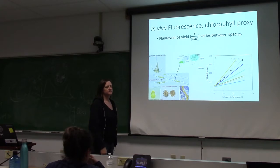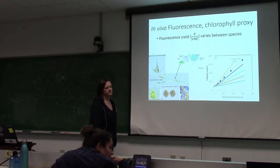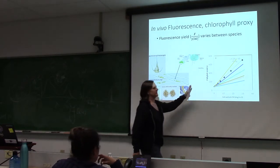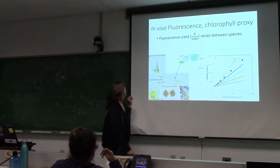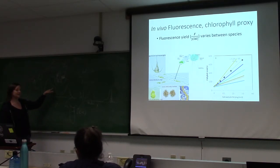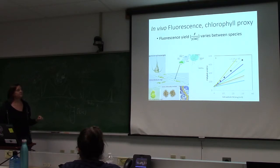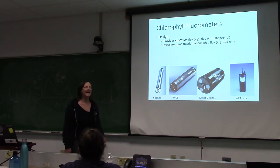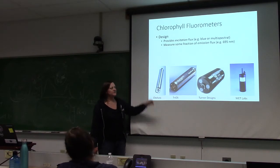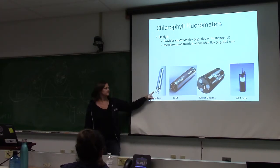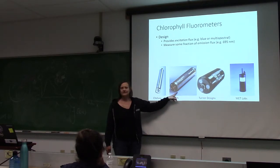So you get your fluorometer back freshly calibrated, go out and make measurements, collect discrete samples to validate, and you plot it — and you get a mess. This data was from the Massachusetts Water Resource Authority, responsible for figuring out how the new sewage outfall into Boston Harbor influenced phytoplankton growth through nutrients. They made tons of fluorescence measurements and collected a thousand water samples, and the relationship was really messy — you increase chlorophyll, you increase fluorescence, but it's just very noisy.